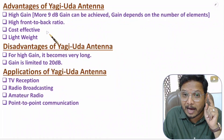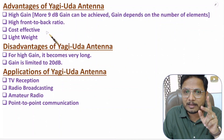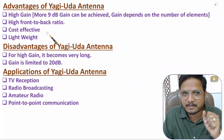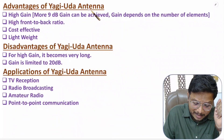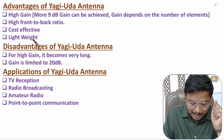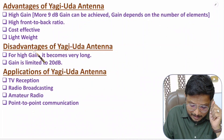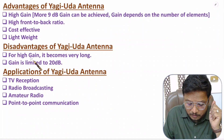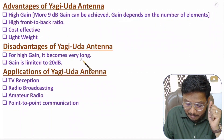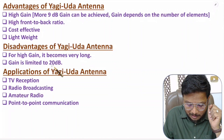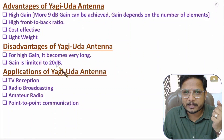With a high front-to-back ratio, one can say it has directional radiation characteristics. Yagi-Uda antenna is also cost effective and lightweight. If you talk about disadvantages, with higher gain you need many elements, because of which the antenna gets long, and gain is limited to 20 dB only — those are the disadvantages.